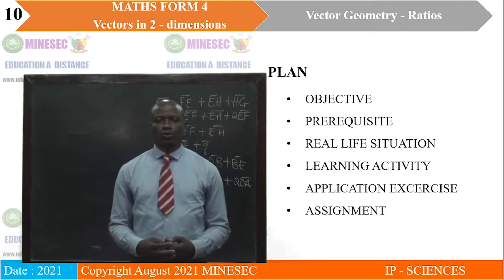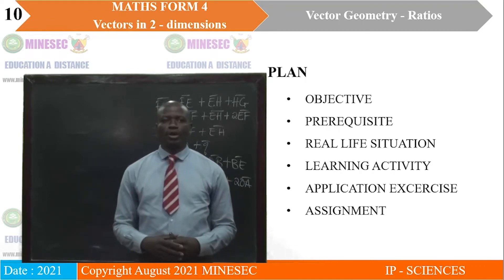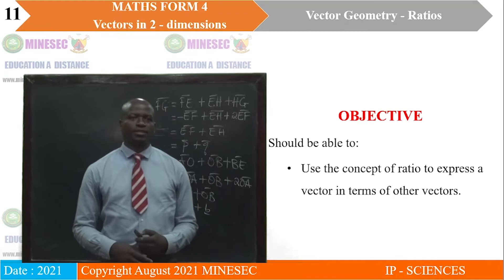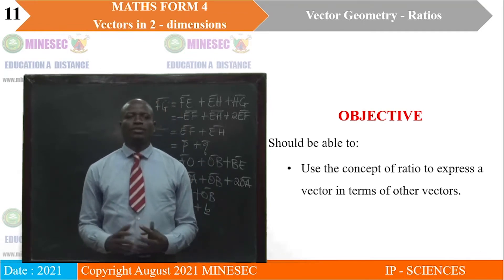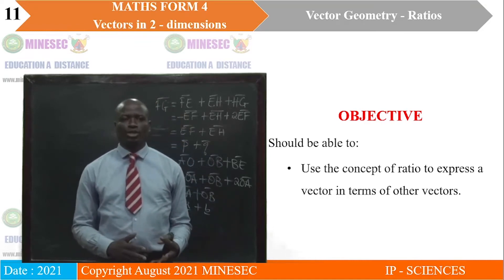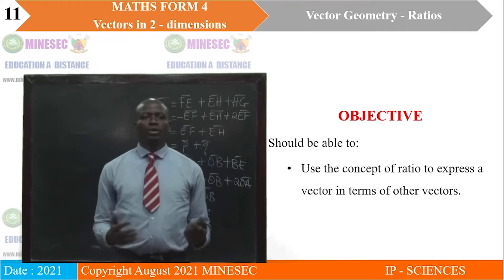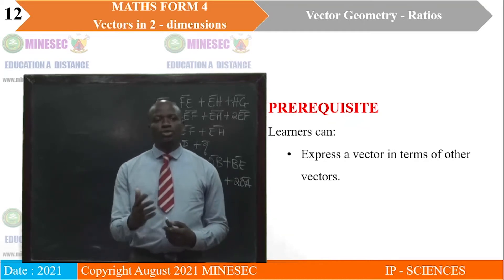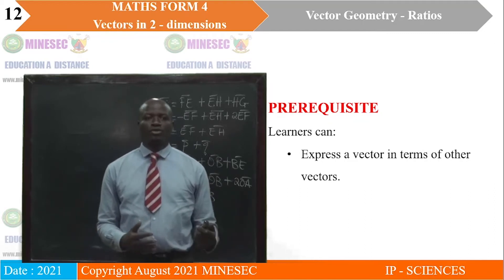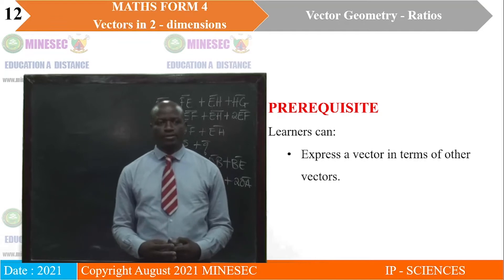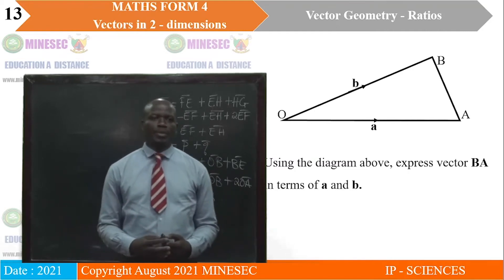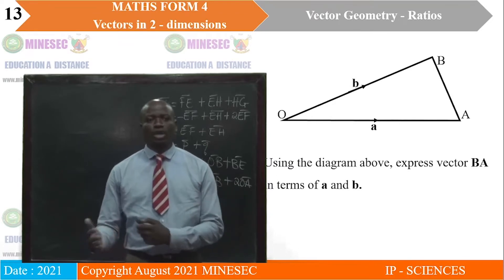The plan of the lesson is as follows. We will start with the objectives of the lesson, then we will see the prerequisites. A real-life situation will go into a learning activity, and then we will have an application exercise and wrap up the lesson with an assignment. The objective of this lesson is that by the end of the lesson, as learners, you should be able to use the concept of ratio to express a vector in terms of other vectors. To effectively study this lesson, you need to be comfortable expressing a vector in terms of other vectors, like what we did in the last lesson.